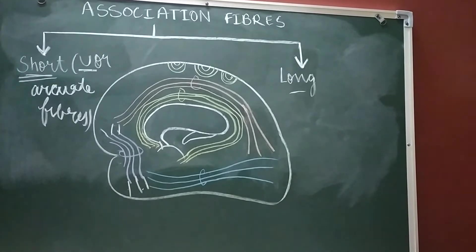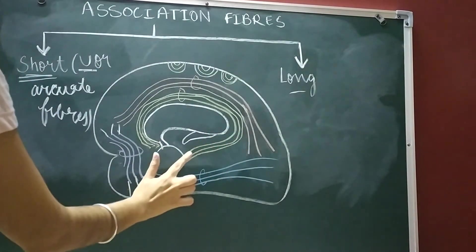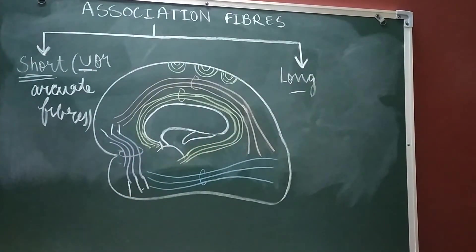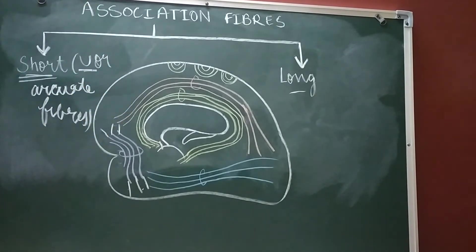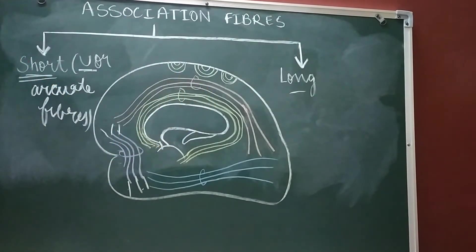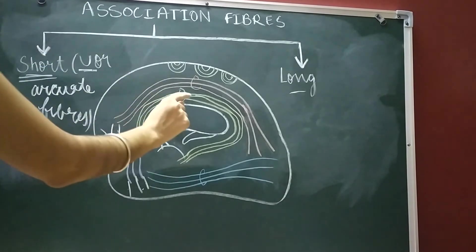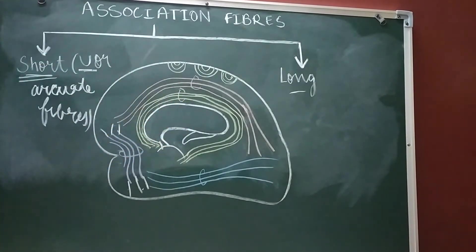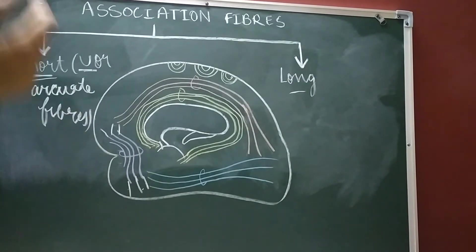Talking about the limbic association bundle or the cingulum — this one marked in yellow. When we discussed the sulci and gyri on the medial surface, we noted the cingulate gyrus. This association bundle, the limbic association bundle, occupies the cingulate gyrus.